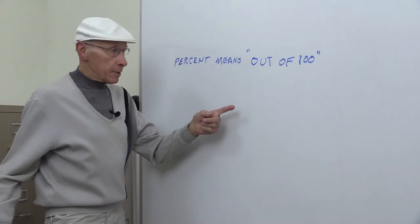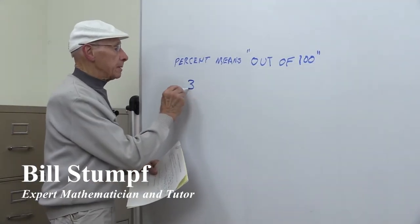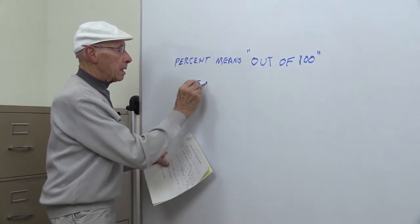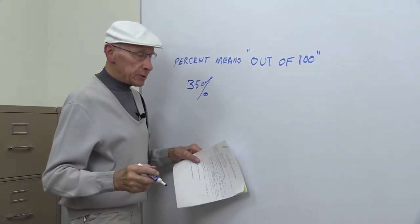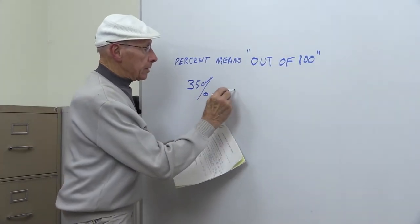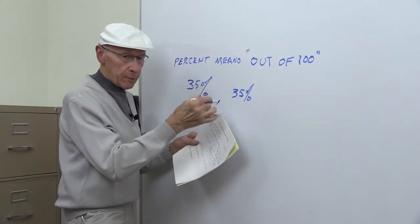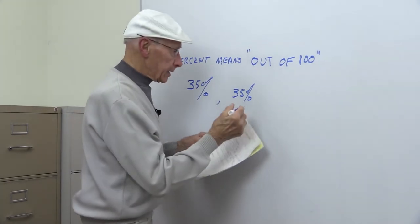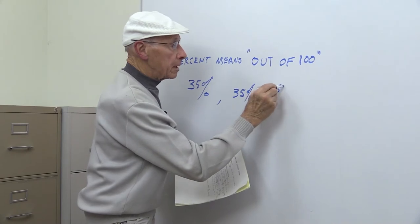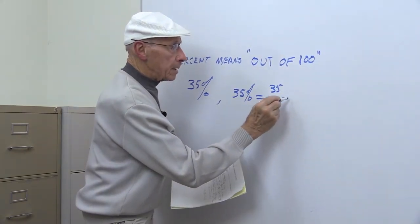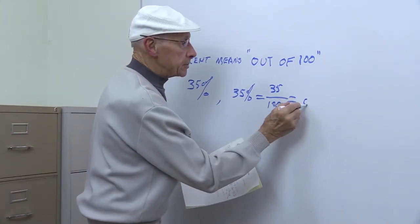Percent means out of 100. If you have 35% and you want to change this to a fraction, you take 35%. Again, we went over this in previous lectures. 35% is equal to 35 over 100, and that's equal to 0.35 if you change it to a decimal.